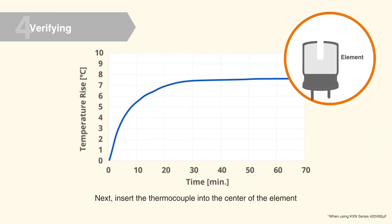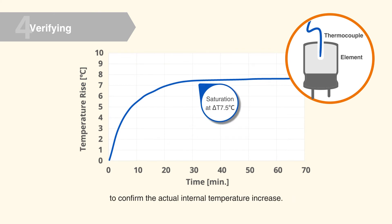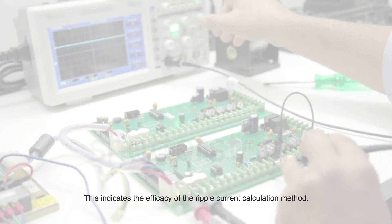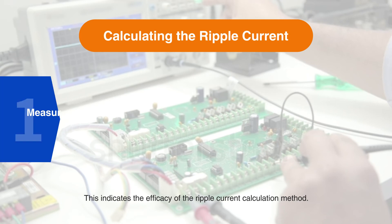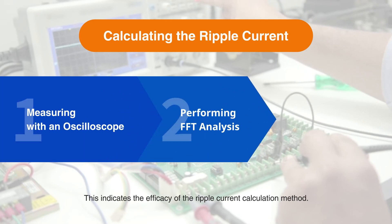Next, insert the thermocouple into the center of the element to confirm the actual internal temperature increase. This is very close to the theoretical value calculated earlier. This indicates the efficacy of the ripple current calculation method.